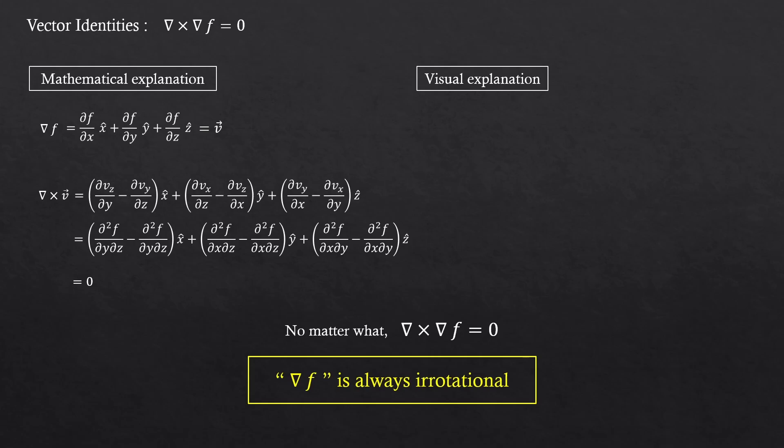When the curl of something is zero, what does that mean? It means it's irrotational. Surprisingly, the gradient of any scalar function is always irrotational. Now, you're probably wondering what this means physically. So here's the visual explanation.